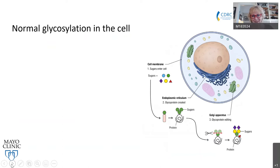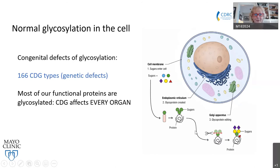Normal glycosylation in the cell is a step-by-step process, which starts with activating the sugars in the cytoplasm, then building from these sugar blocks a step-by-step sugar chain called an oligosaccharide. After the chain is ready, it's transferred to a protein or a lipid — which we call a glycolipid or glycoprotein — and goes under some more editing and is secreted out from the cell through the Golgi apparatus.